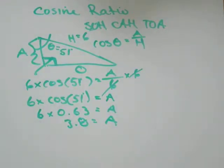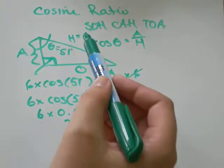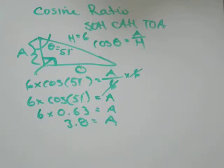Go back and have a look at your triangle. We know that the hypotenuse has to be the longest side. It's 3.8, a smaller number than 6. So we can feel pretty confident that we're getting the right answer.